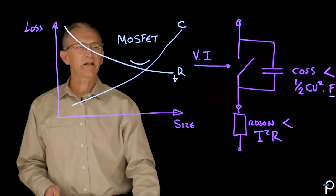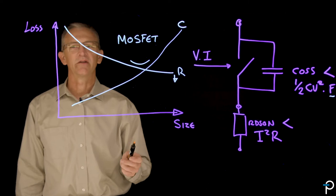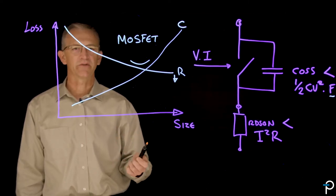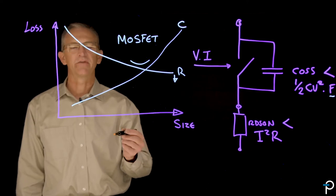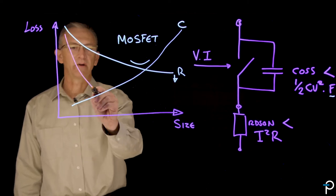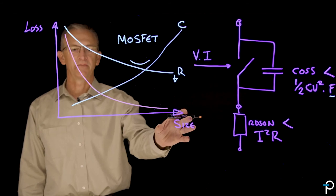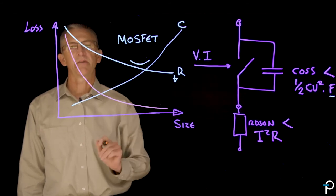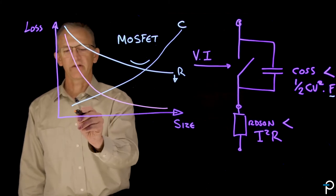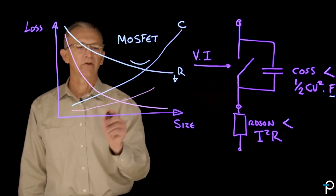Now gallium nitride is a very special substance and at its RDS on, its specific RDS on, and that's the RDS on related to the physical size of the device, is very low. And so that provides us with a far steeper decline of RDS on related to the physical size. And the marvelous thing about that is that the capacitance is also very low. So it still starts down here close to the origin, but it's a much shallower curve.